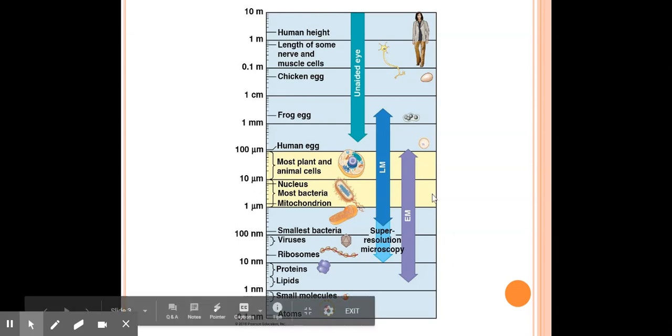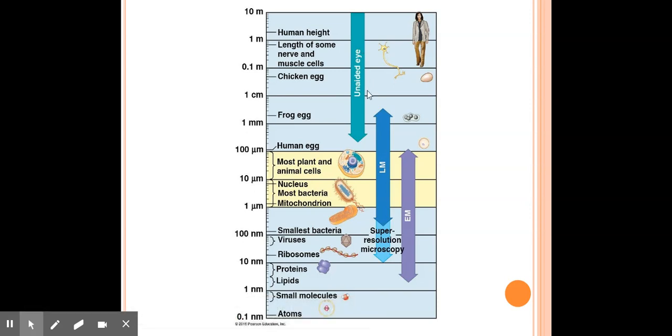As we move smaller, we can see the unaided eye or sometimes referred to as the naked eye. We don't need binoculars, telescopes, microscopes, or any sort of thing to assist us in viewing them. Then we move into the LM, which would be the light microscope, specifically compound light microscope, so that we're going to compound those lenses so that we can get up to a thousand times magnification.